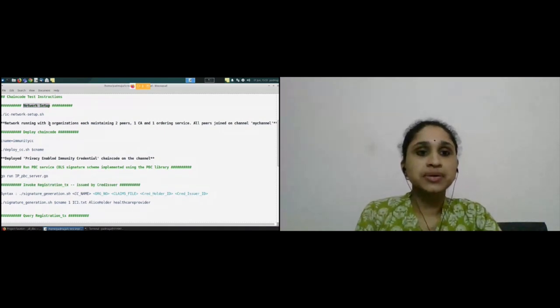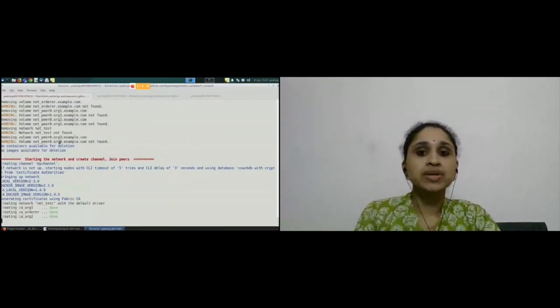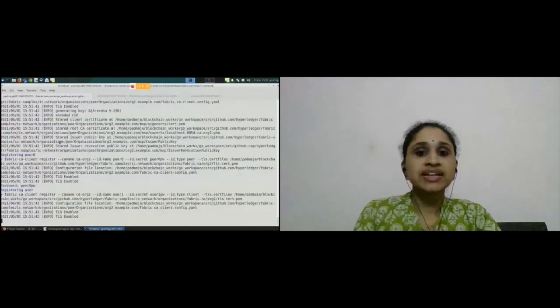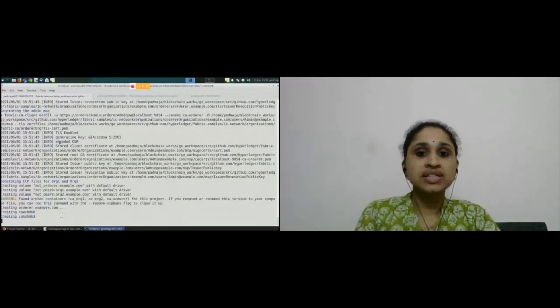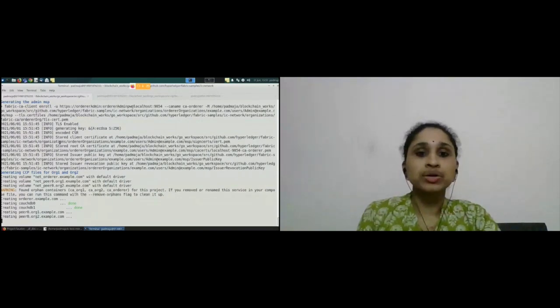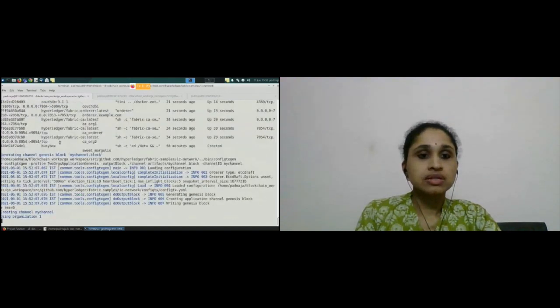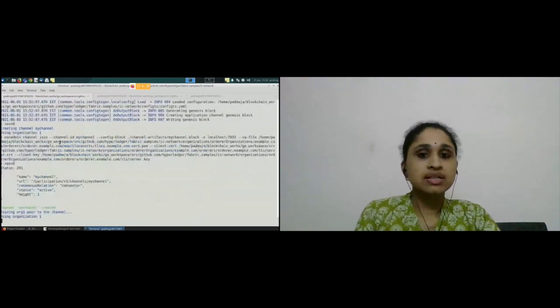First comes the network setup phase. As I already mentioned, we implemented our system using Hyperledger Fabric 2.3. We created one channel with two organizations, Organization 1 and Organization 2. Each organization will have two peers, one certificate authority, and one ordering service. We used CouchDB as a state database. As you can see, the channel is getting created and peers are added to the organizations. This completes the network setup phase.